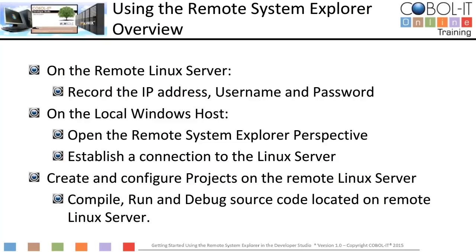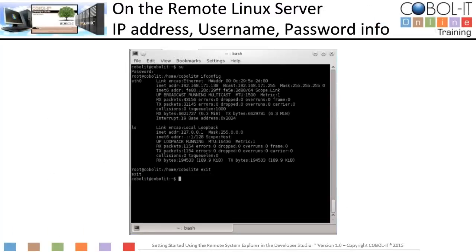Let's go to our remote Linux server now and get started. We'll begin by logging in. Our username is COBOL IT. To get the IP address of our machine, we used the SU command to become a super user, then ran the command ifconfig. We will use the INET address to connect to this remote Linux server from our Windows host. Now let's return to our Windows host.